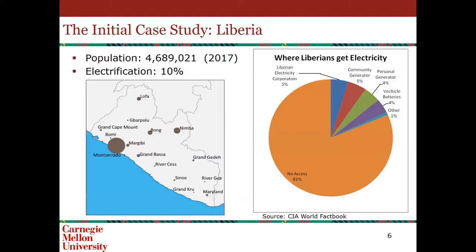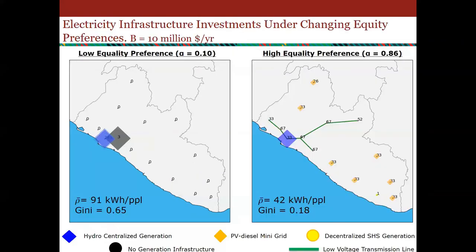We did a test case on Liberia. This is a population density map of where people live — most people live in the northern part of the country, almost nobody in the southern part. We're doing it in Liberia because 81% of the country didn't have any access to electricity when we started this project. If they do have electricity access, a lot of them are getting it from the Liberian Electricity Corporation, the main power system, which is only in the capital city of Monrovia, in Montserrado county.